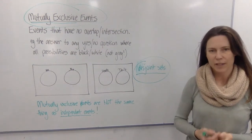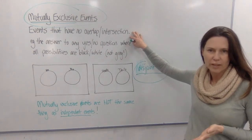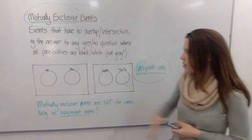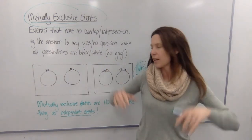Now mutually exclusive events are quite simple. They're just events that don't have any overlap or intersection. So when we draw them on a Venn diagram there is no intersection, they're literally sitting apart.